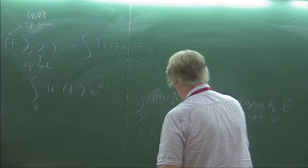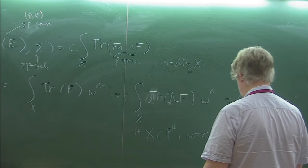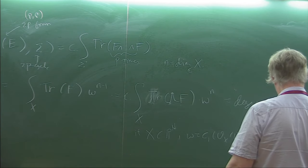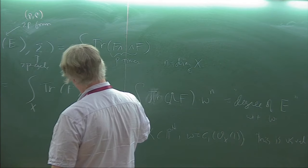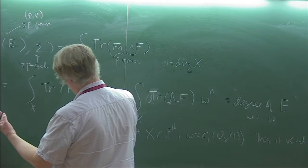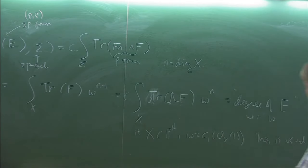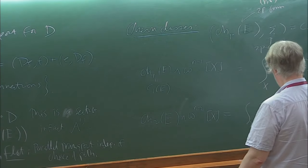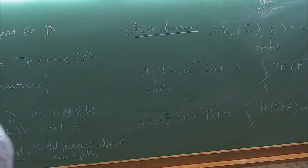What we're interested in is ch2. So ch2 of E wedge omega^{n-2} evaluated on x equals the integral over x of the trace of F wedge F times omega^{n-2}. Let me erase and make a simplifying hypothesis to make the formulas cleaner.